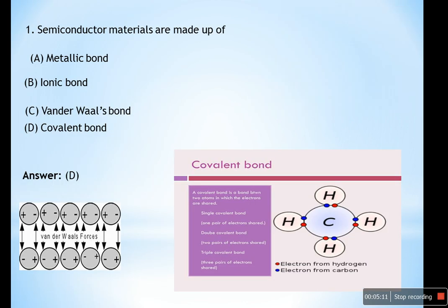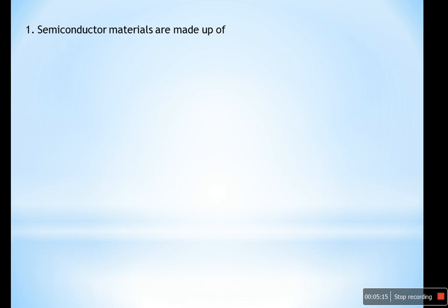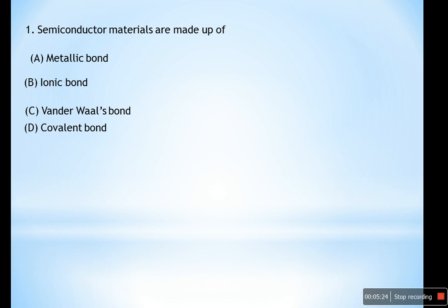Question number one: Semiconductor materials are made up of — (A) metallic bond, (B) ionic bond, (C) covalent bond, or (D) van der Waals bond. The covalent bond involves the sharing of electrons between two atoms, while van der Waals forces are weak forces dependent on the distance between atoms or molecules.